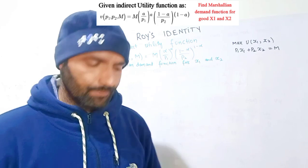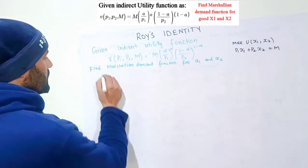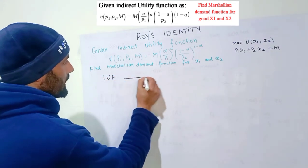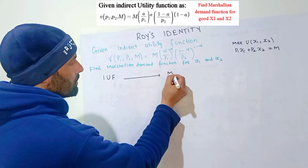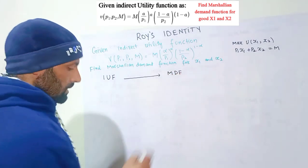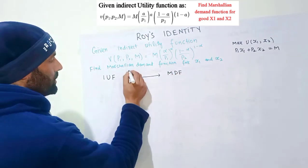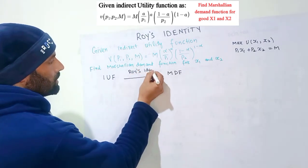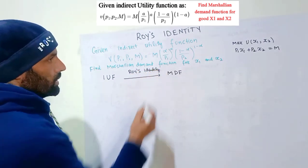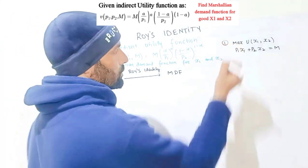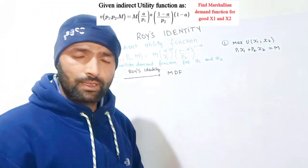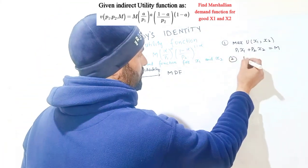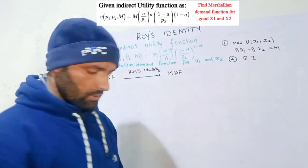Another shortcut method is to use Roy's identity. If we are given the indirect utility function, we can directly extract the Marshallian demand function by applying Roy's identity, rather than going through the full maximization problem.